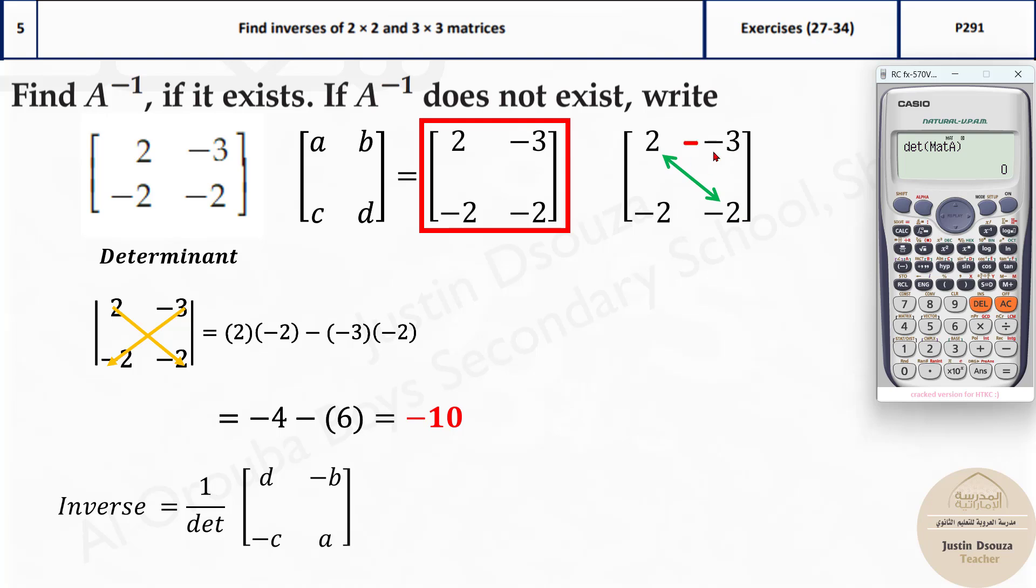This minus 2 goes up and these two signs become minus. And then you just write, 1 by determinant is minus 10 and initially we had minus 2 D, it became A and A became D. And here you multiply both by minus. This is the answer. You can multiply the negative 1 by 10 inside and you will get these answers. This is the determinant. You can check this.